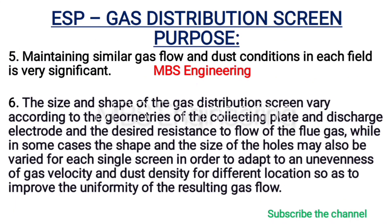Point 5: Maintaining similar gas flow and dust conditions in each field is very significant. Point 6: The size and shape of the gas distribution screen vary according to the geometries of the collecting plate and discharge electrode and the desired resistance to flow of the flue gas. In some cases, the shape and size of the holes may also be varied for each single screen in order to adapt to unevenness of gas velocity and dust density at different locations, so as to improve the uniformity of the resulting gas flow.